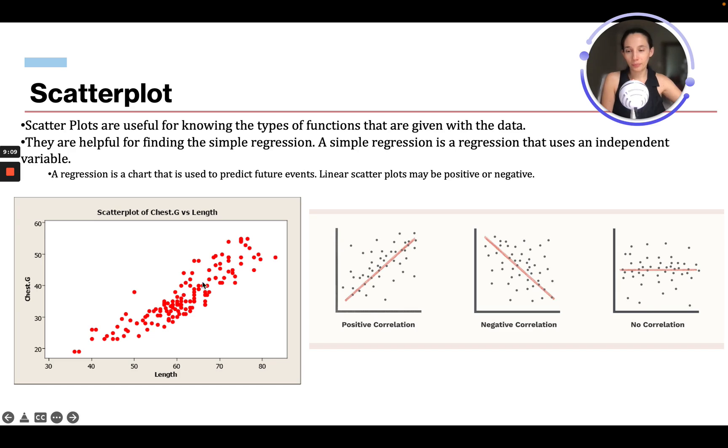We have a scatter plot. If it is a positive correlation, say chest and length, if there was a positive correlation, the data would look like this - you can see it's increasing. If it had a negative correlation, you would see the plots are decreasing. As this gets bigger, this gets smaller. And no correlation, all of the points would be scattered in an equal way.